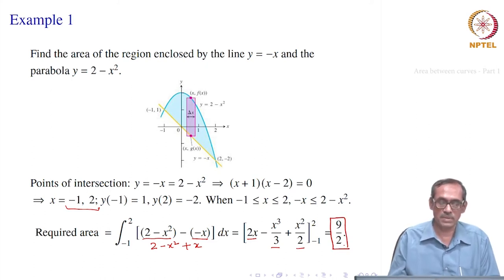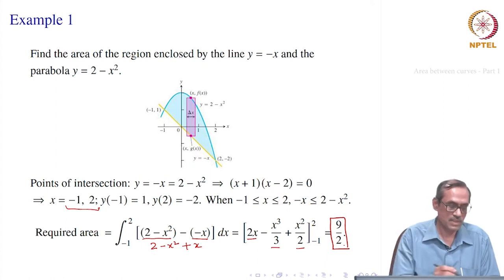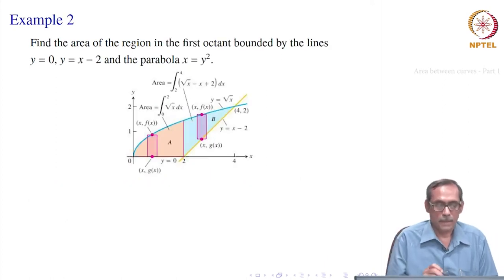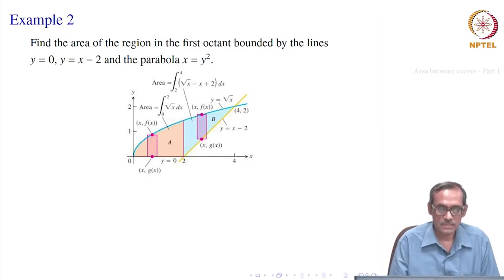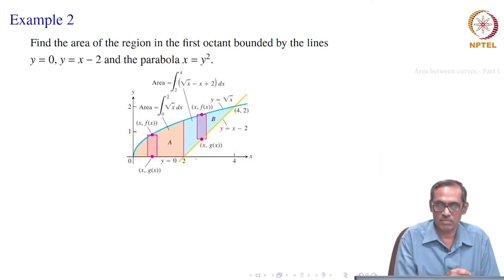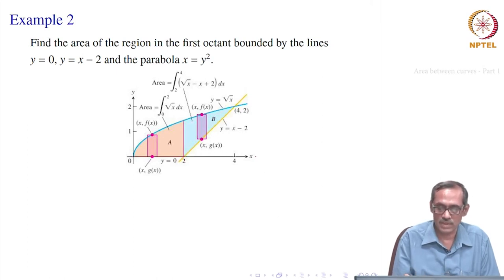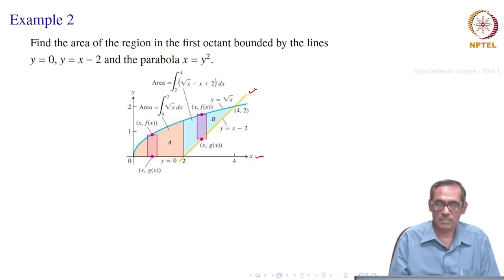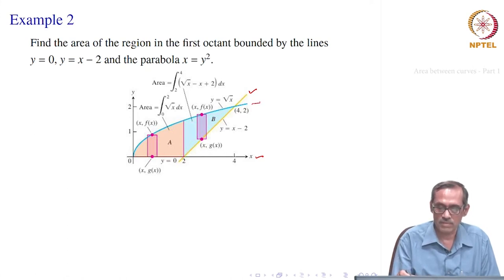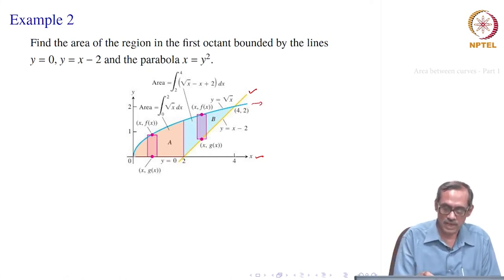Sometimes it may be easier to view the region from the y-axis side instead of the x-axis side. We will see this in the next problem. Here we want to find the area of the region in the first octant bounded by y = 0 (the x-axis), the line y = x − 2, and the parabola x = y² (the blue curve). We want the area of this region.